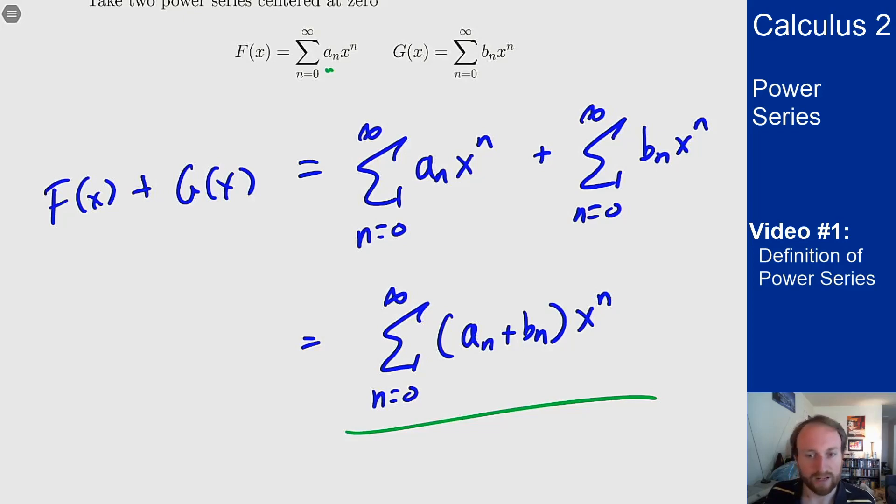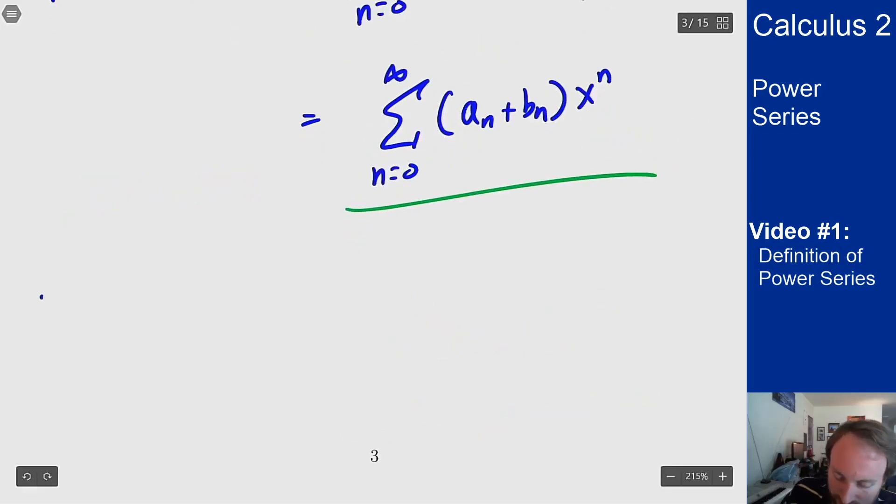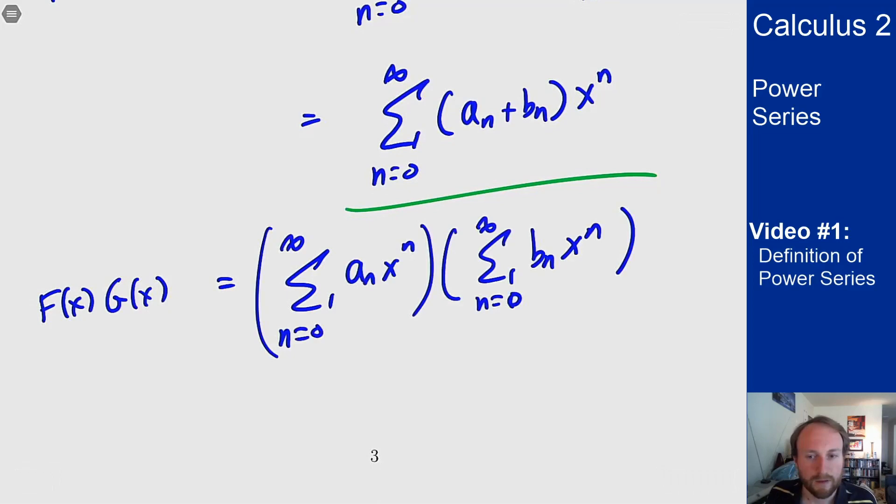But there's one other operation that we want to spend more time on with power series and that's multiplying them. I want to think what's going to happen if I multiply these together. And again we should get a power series for our answer. We have to figure out how we're going to write this in a way to get a power series at the end. To do that let's start by just writing out the first couple terms from each thing and seeing how we multiply those. These are polynomials. We can think about foiling polynomials and see what happens.